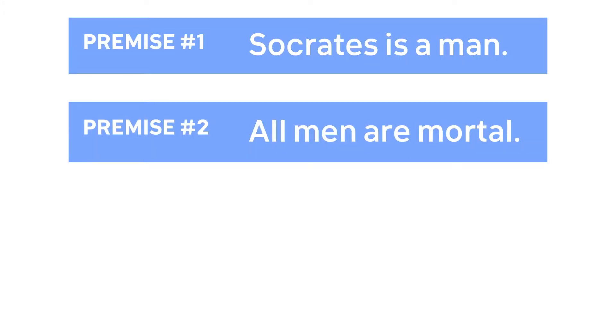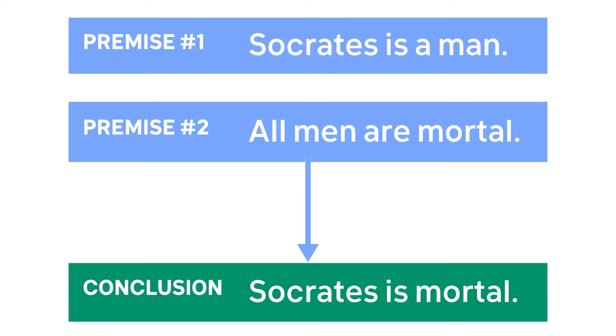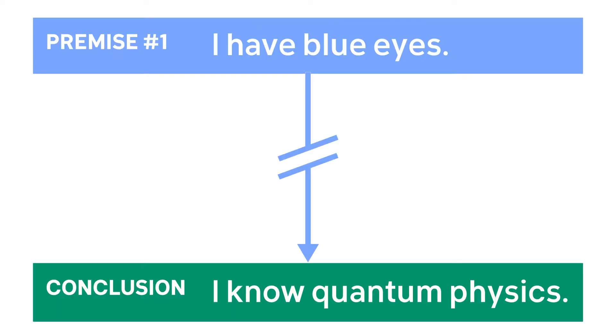An argument is logically valid if the conclusion logically follows from the premises — if you assume all the premises are true, does it logically follow that the conclusion must also be true? For example: Socrates is a man; all men are mortal; therefore Socrates is mortal. That argument is logically valid. An argument is logically invalid if the conclusion doesn't follow from the premises — for instance, 'I have blue eyes therefore I know quantum physics.' The colour of your eyes has no relevance to whether you know quantum physics.